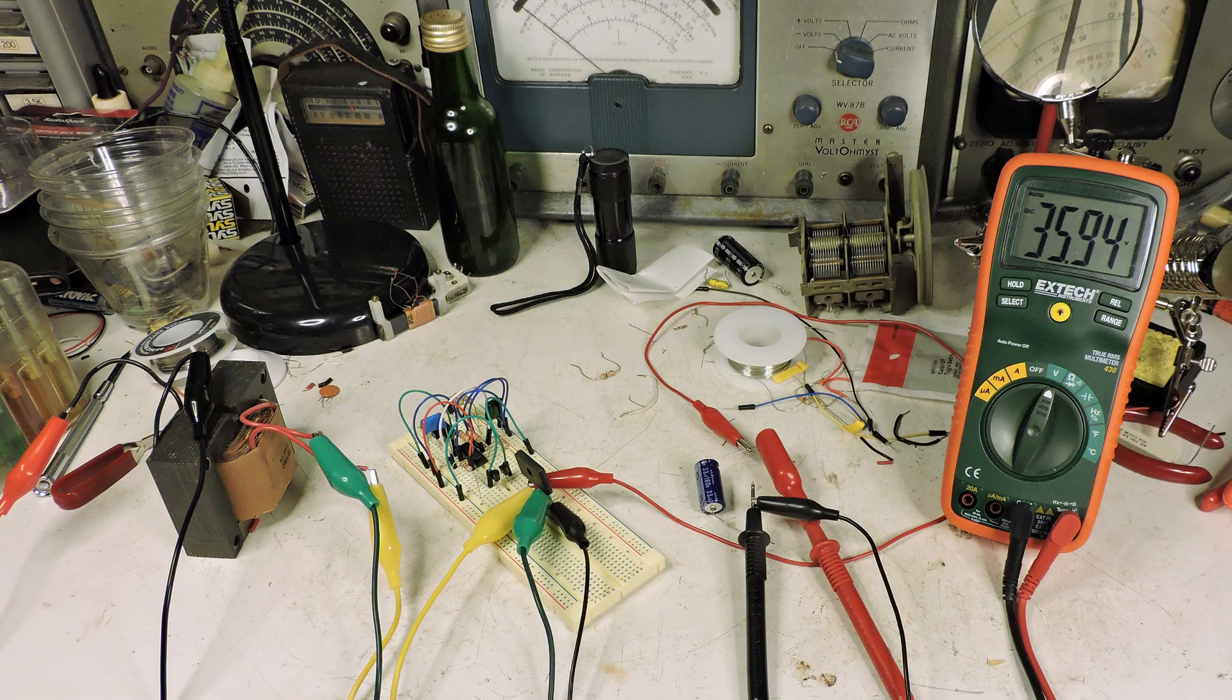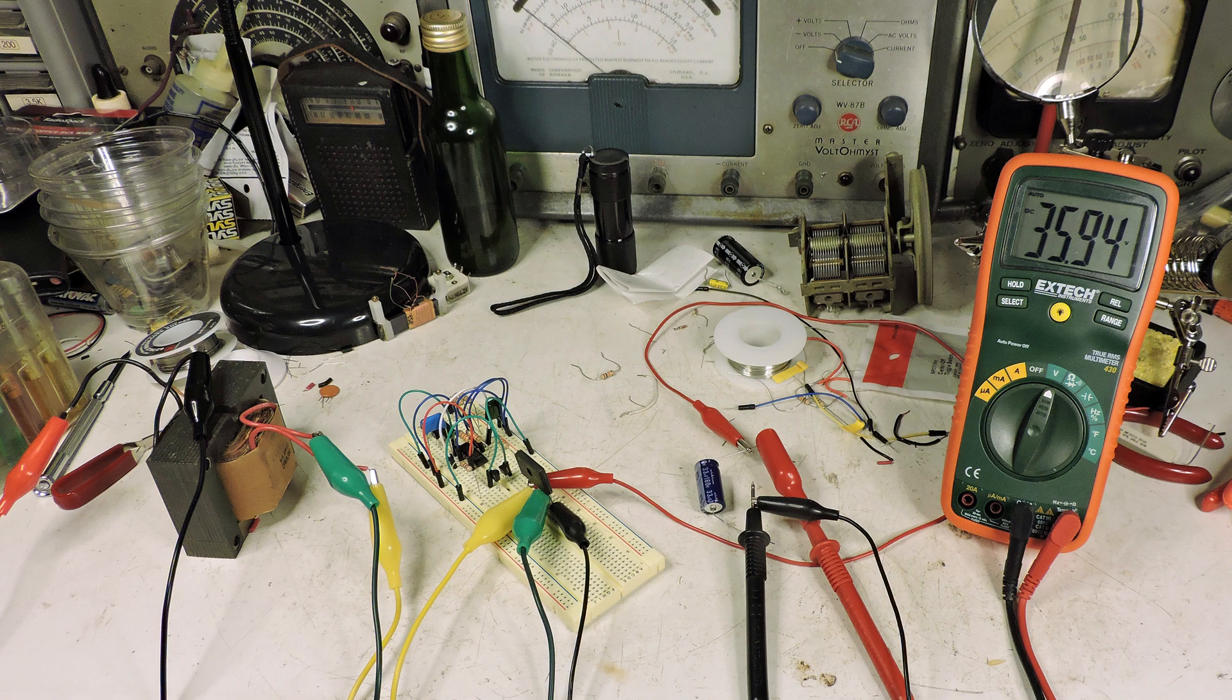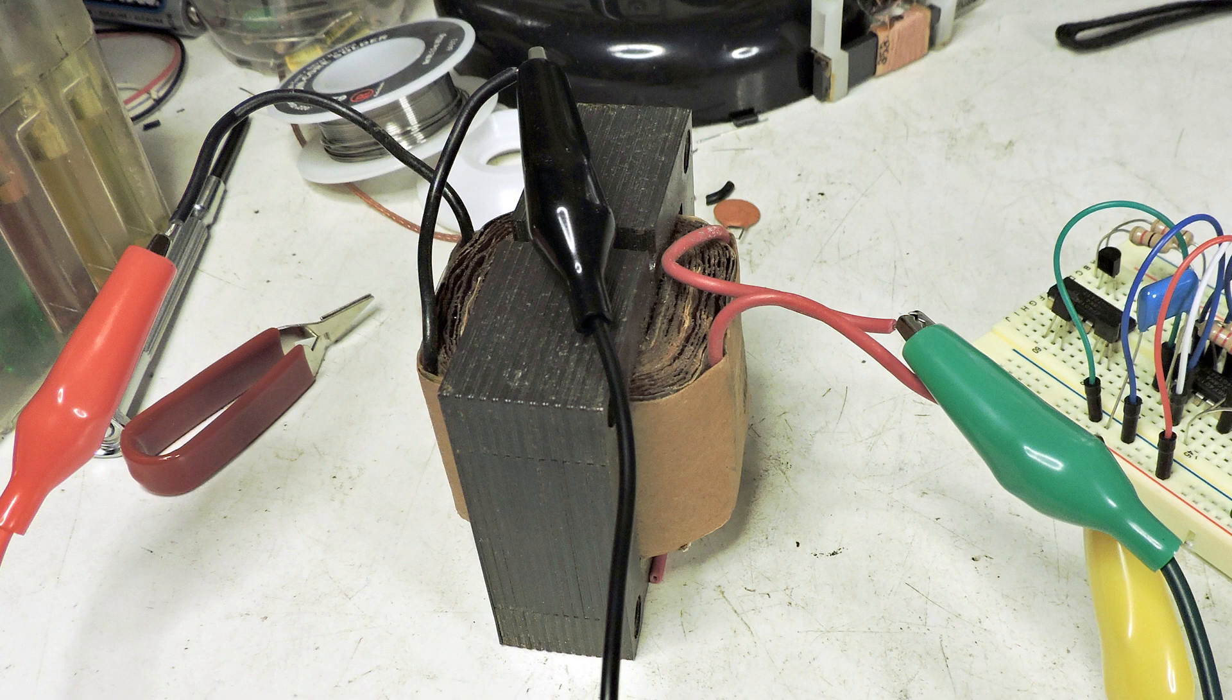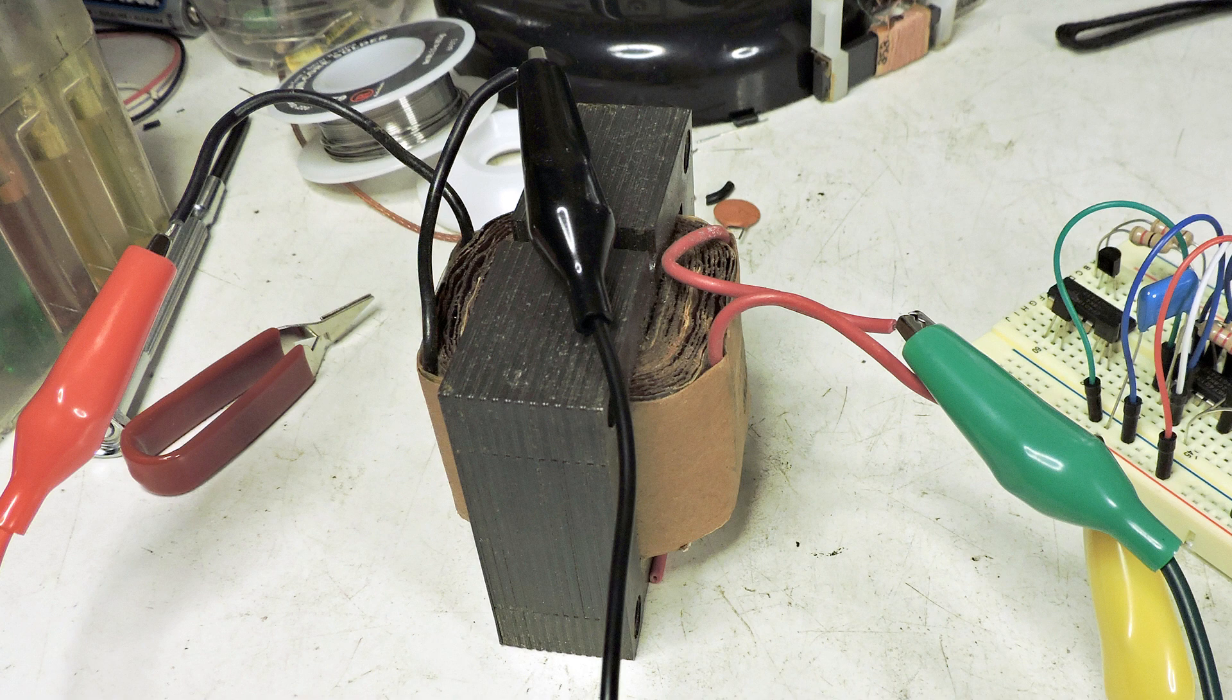I'm getting ready to work on a power supply for that AM solid-state transmitter. And this is my setup so far. I've got the transformer that I bought off of eBay. It's 120 in and 36 volts AC out.